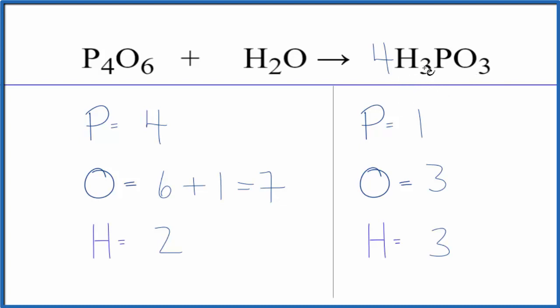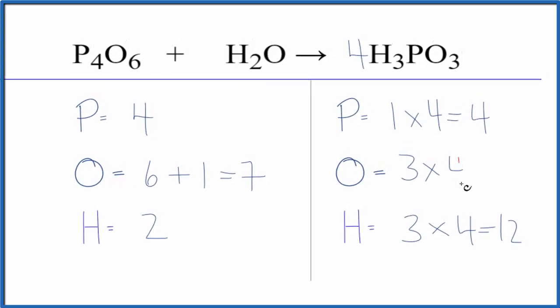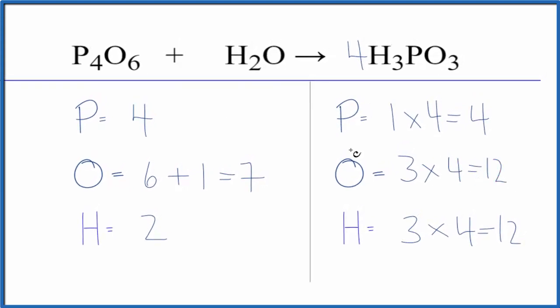So if we do that, we have three times four. That'll give us 12 hydrogen atoms. One times four, four phosphorus atoms. So those are balanced. And then three times four, we get 12 oxygen atoms.